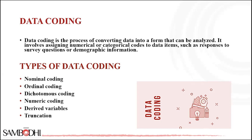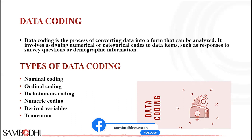Truncation involves removing part of a data item. For example, a researcher might truncate a variable — recording the value as 23, 47, etc., for a measurement value of 12.23 or 12.47. This could be helpful when the analysis is being performed manually.